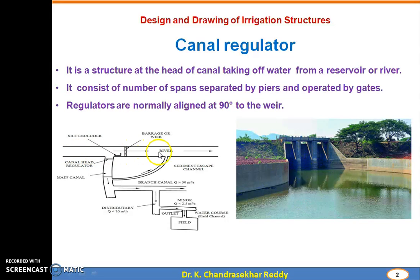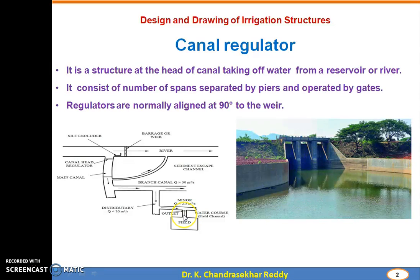If you observe here, this is the river. From the river, there is a barrage or weir, and water will be diverted here. This is the canal head regulator. Here we construct the canal head regulator. From the head regulator to the main canal, main canal to branch canal, branch canal to distributory, distributory to the minor, minor to the water channel, and water channel to the field. This is the networking of the canal. Water will be diverted by constructing a barrage or weir across the river through this regulator.